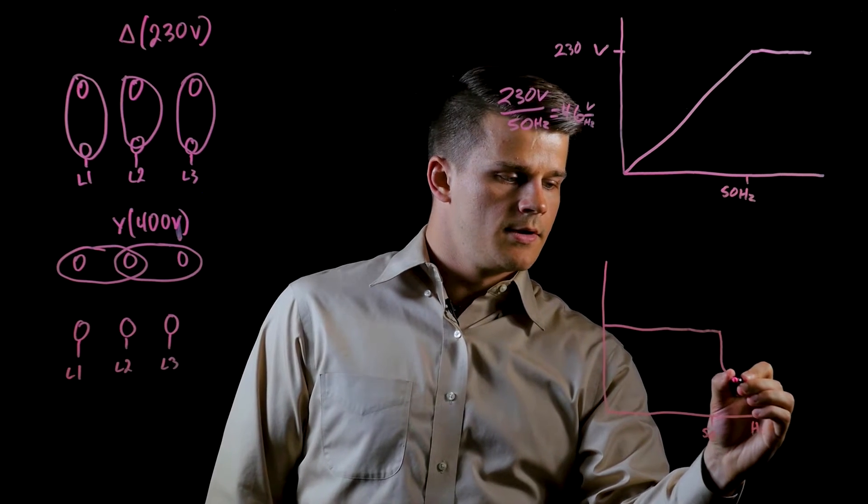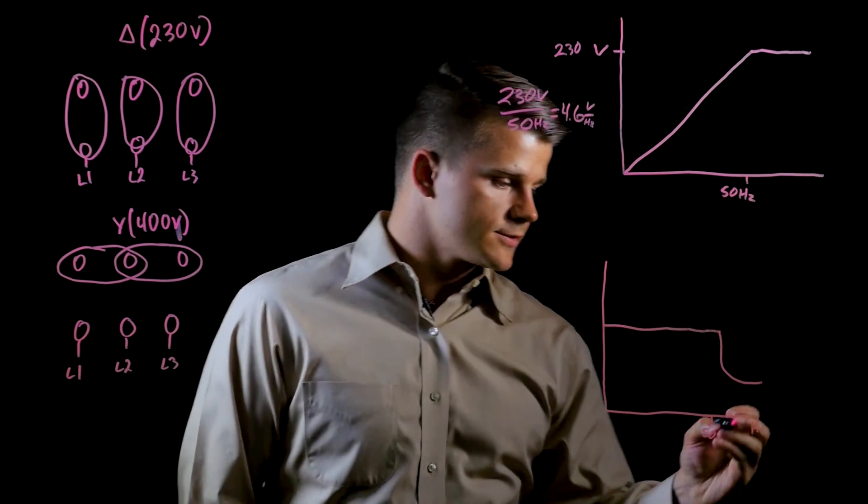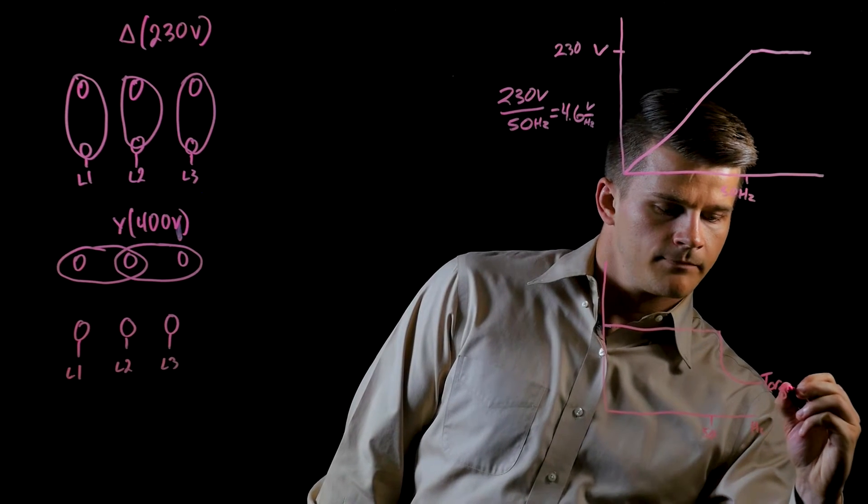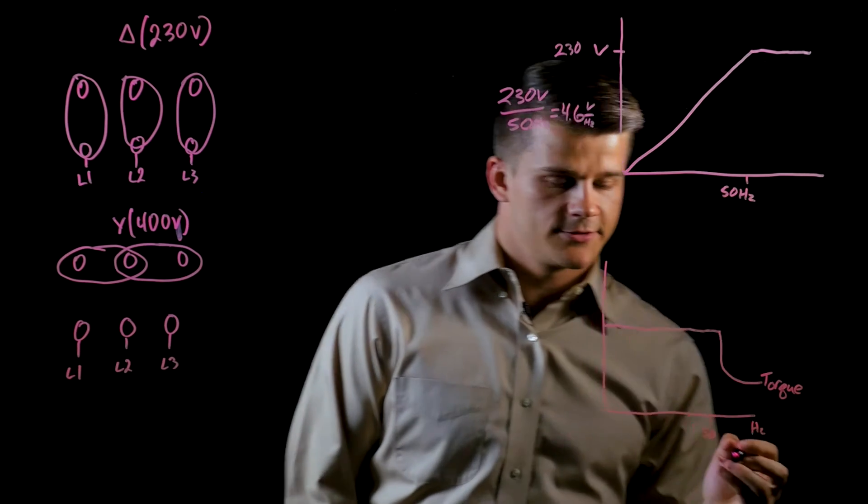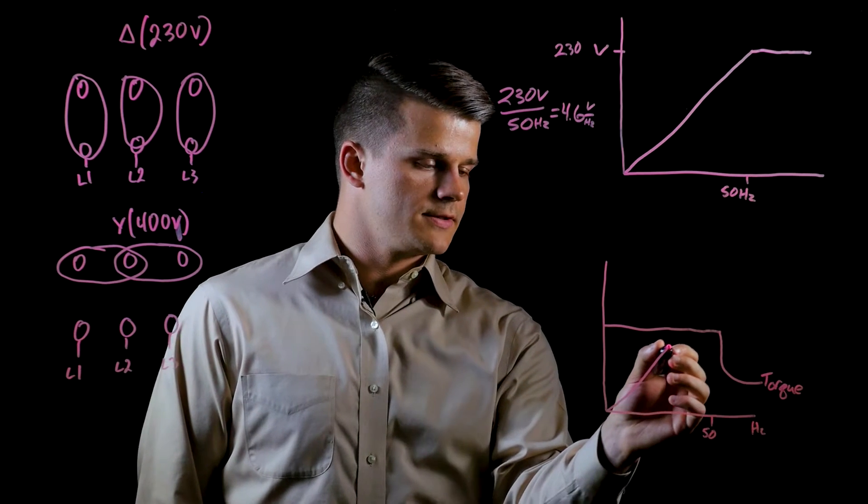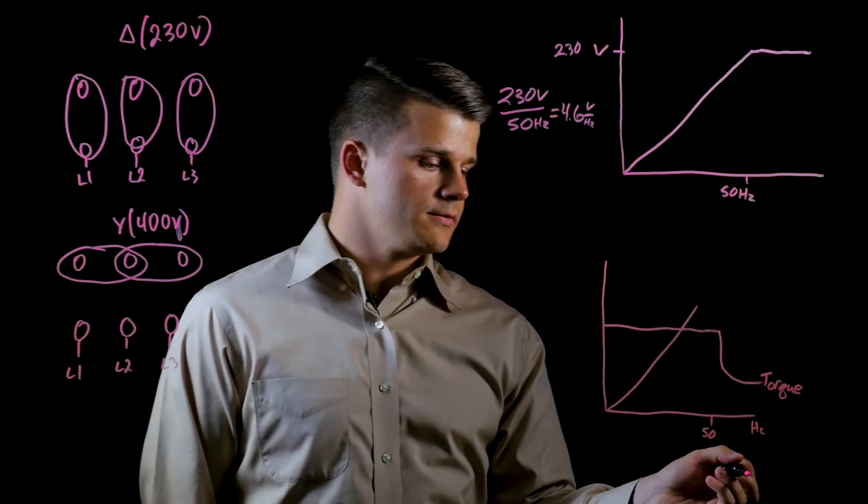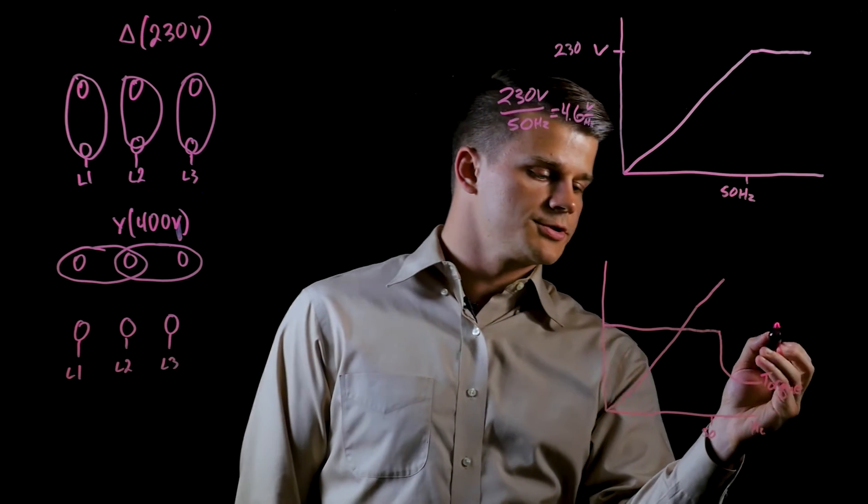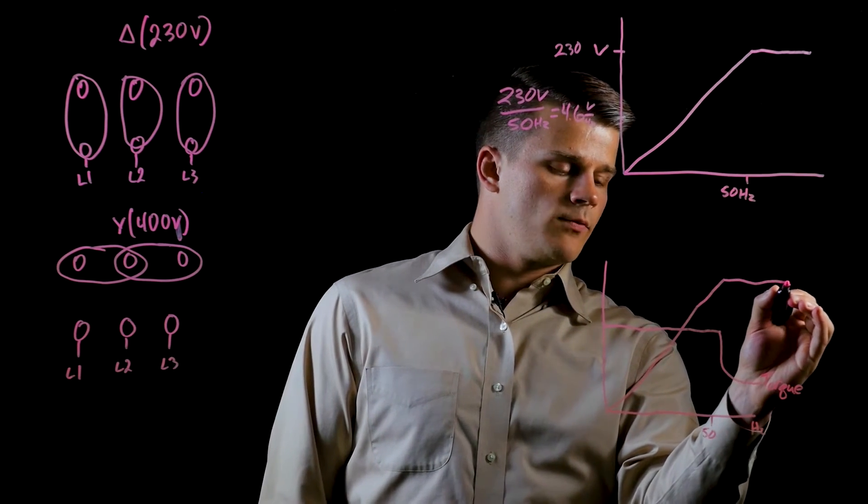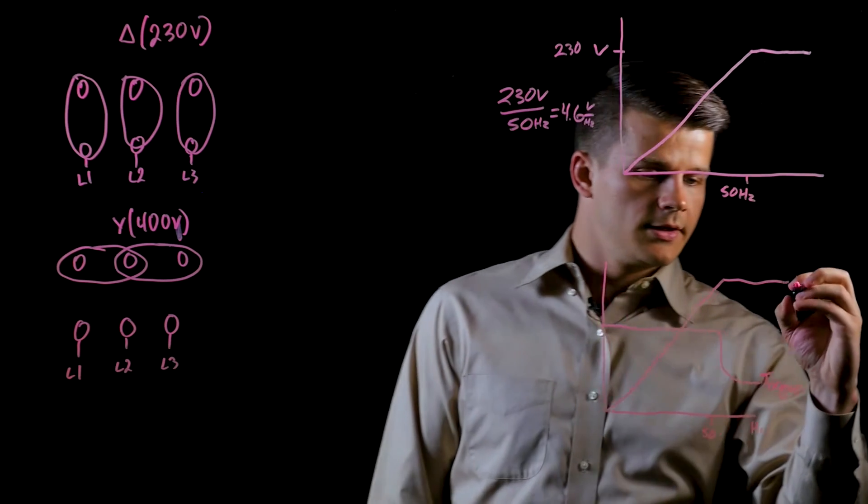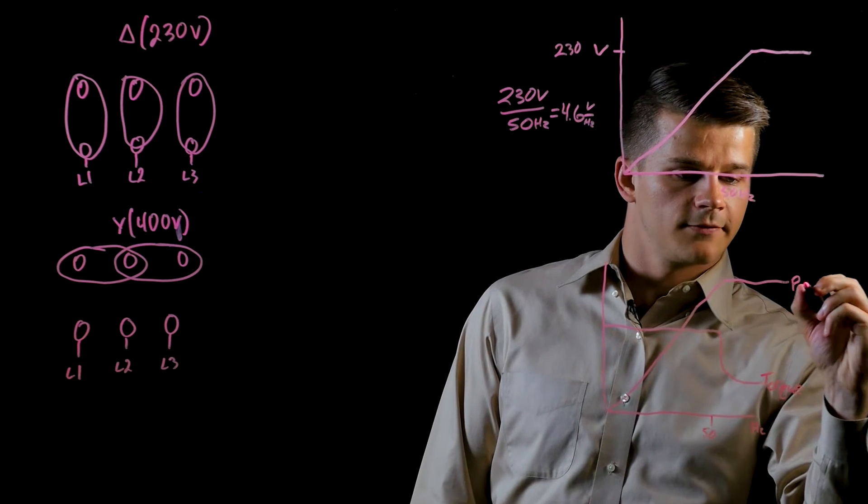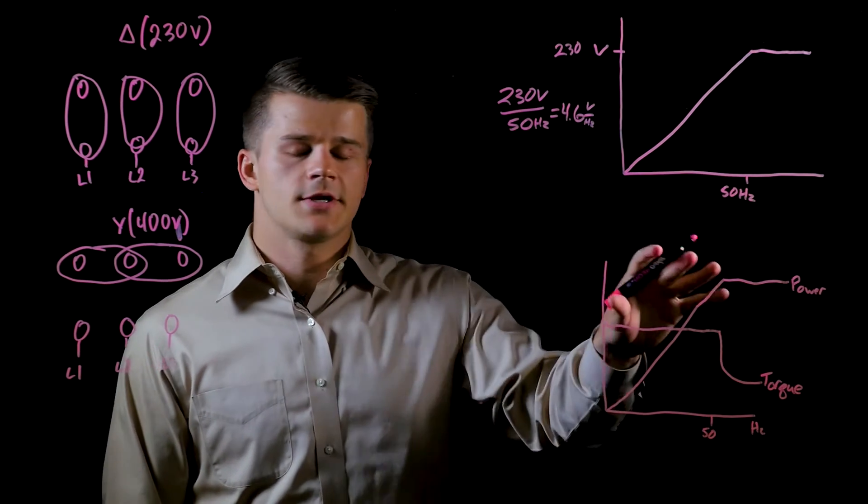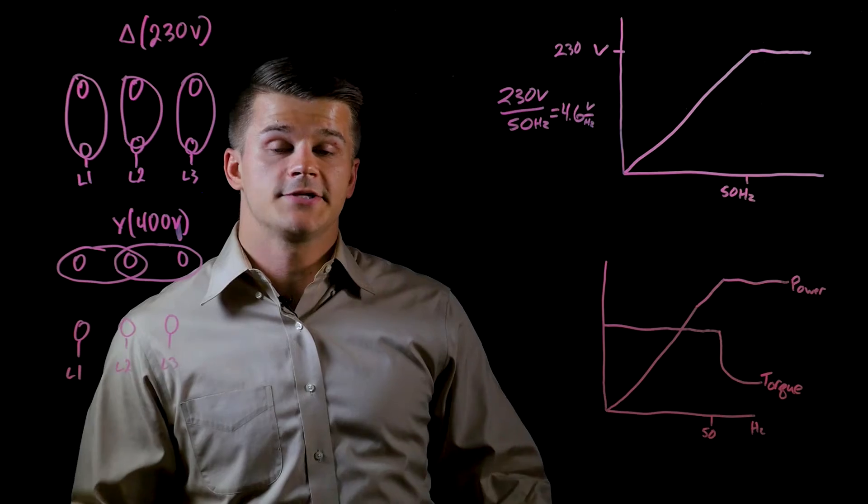In this case, your torque decreases inversely proportional to the frequency in the field weakening range. For power, that increases proportionally up to 50 Hertz, and then once we get past 50 Hertz, it stays constant. That's your power in standard operation. Now we'll talk about the 87 Hertz trick.